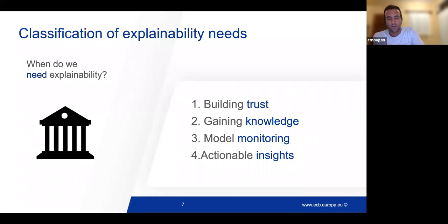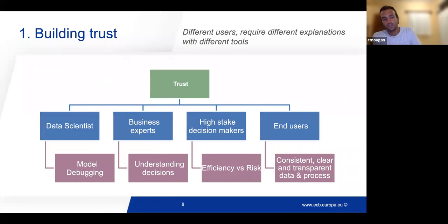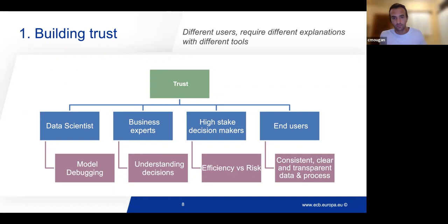Now we are going to classify different explainable AI needs. When do we need an explanation in a use case of the European Central Bank? We have found four different types of common explainable AI needs. The first is building trust. Trust is a common theme across machine learning applications. We look at the four different types of users and try to build trust for all of them, since different users require different explanations and different tools.